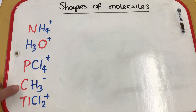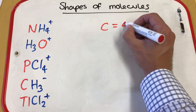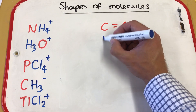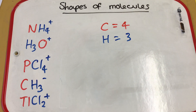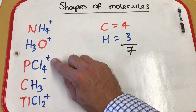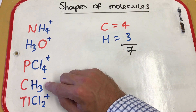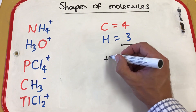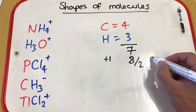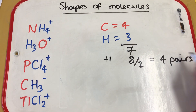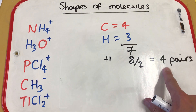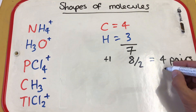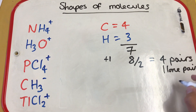Now let's look at CH3 with a minus charge. Carbon is in group four, giving four bonding electrons. We have three hydrogen atoms attached, giving a total of seven electrons. Unlike a positive charge where we take one away, a negative charge means we have an extra electron, so we add one to make eight, then divide by two to give four pairs.